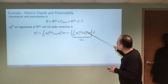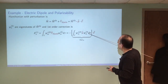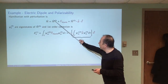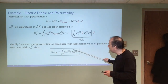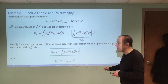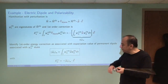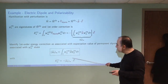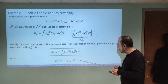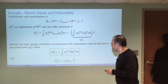This dipole moment integral is a vector operator with X, Y, and Z components, giving the expectation value of the electric dipole moment for the zeroth-order energy eigenstate. The perturbation shifts the energies by minus that expectation value dotted with the applied electric field — shifting energies up or down depending on the size of this interaction. This matches the expression from the electrostatics chapter, with the difference being that here we have the quantum mechanical expectation value.